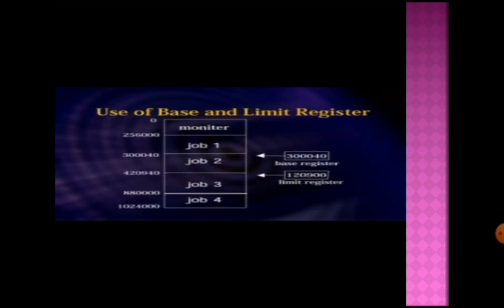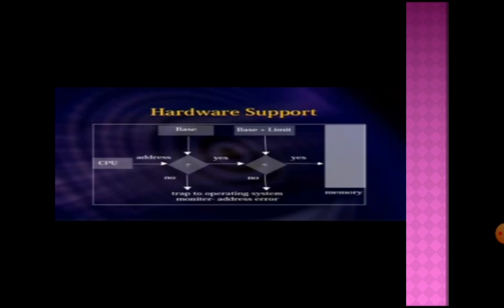If we talk about Job 2, the base register value is checked. If an address is greater than or equal to the base register value and less than the base register plus the limit register value, then Job 2 is accessing its own valid memory region. If the condition is false, it means Job 2 is trying to access Job 1's region, and access will be denied.